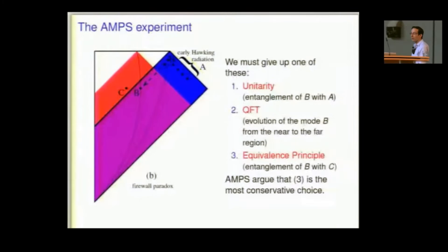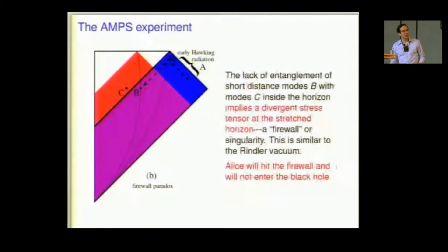So that's a contradiction. So we must give up, it seems, either unitarity, the entanglement of B with A, that came from unitarity, or quantum field theory. I guess we could imagine that there's something that breaks down in evolving this Hawking quantum backwards and forwards from the near to the far from the horizon region. But why? I mean, everything is way above the Planck scale. Or, third option, we have to give up the entanglement of B with C. In other words, we have to give up the equivalence principle. And that's what AMPS argue is the most conservative choice.